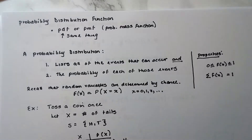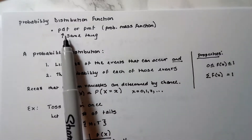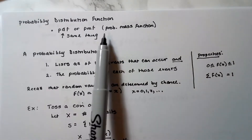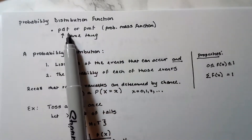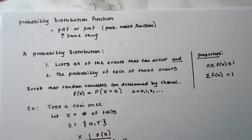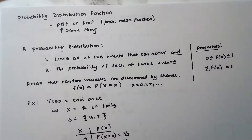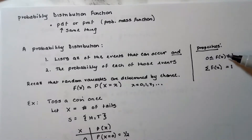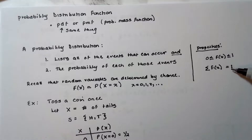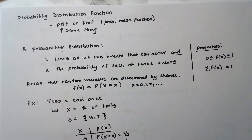A probability distribution function is called a PDF or PMF — same thing. PMF stands for probability mass function; there's no difference between them, but you might see those letters. What you need to know is that a probability distribution lists all of the events that can occur and the probabilities associated with each of those events. The properties are: the probability has to be between zero and one, and the sum of those values has to equal one.